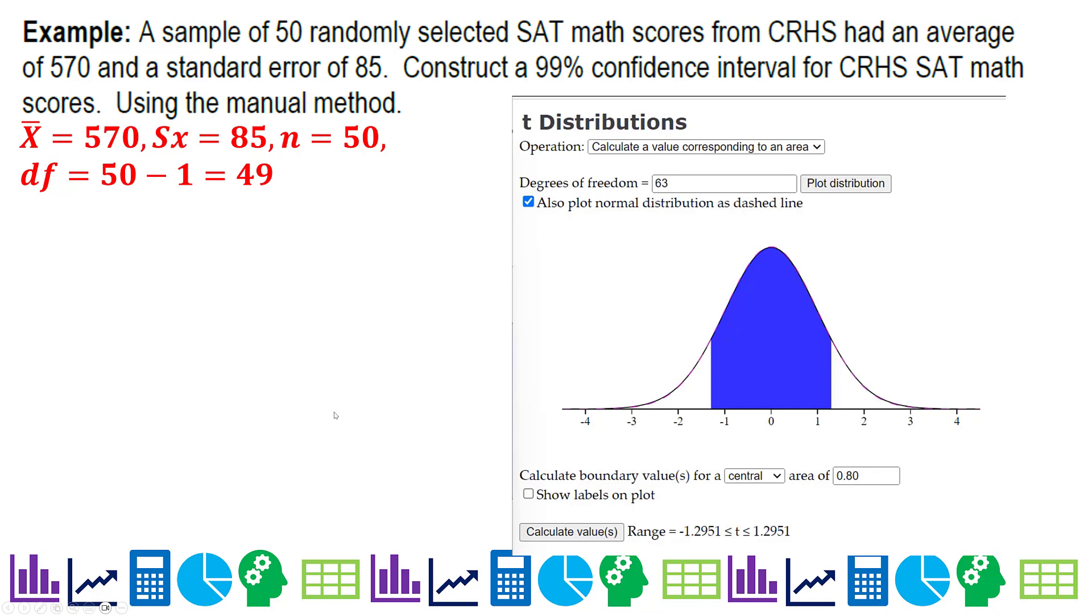To find the critical value in this example, we have a sample size of 50, so our degrees of freedom is 49, so we're still at the same t-distribution staplet. I still have calculate a value, because we're trying to find a critical value. In this case, my confidence interval is 99%, so I change that to 0.99, and hit calculate values, and I get a 2.68.